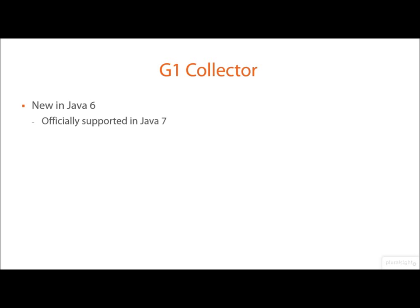So finally, we have the G1 garbage collector. This garbage collector was introduced in Java 6, but it wasn't officially supported until Java 7. It's a very different beast to the other garbage collectors. This is something called a compacting collector, and it's planned as a replacement for the concurrent mark-and-sweep collector.